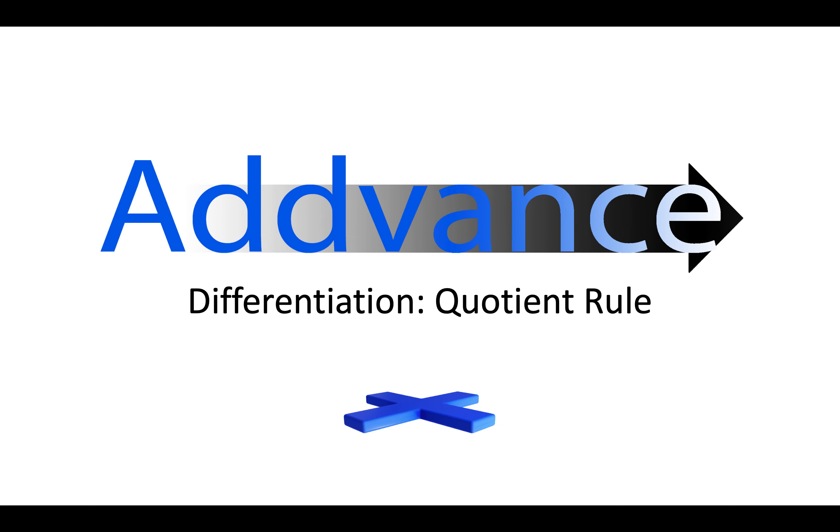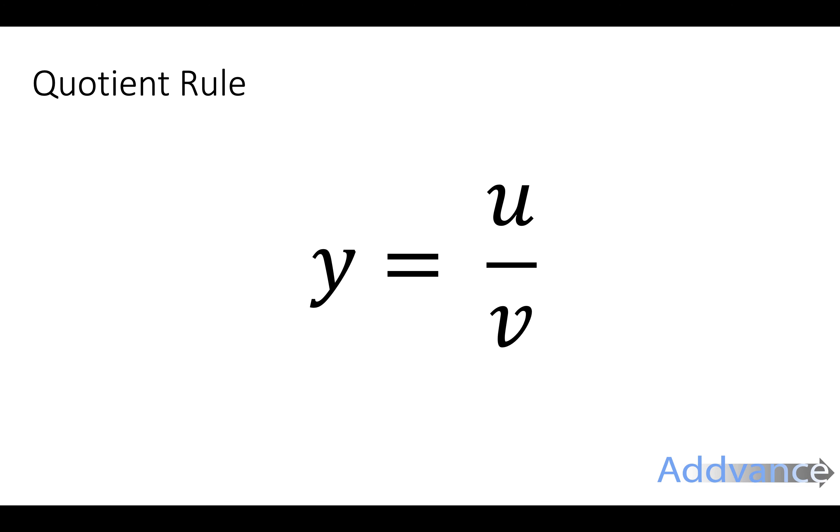Now the quotient rule is for when you get a function that is something divided by something. So you might have a function on top divided by a function on the bottom. We call a function on the top u and we call a function on the bottom v.